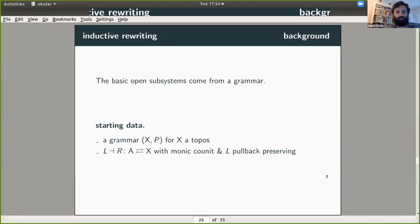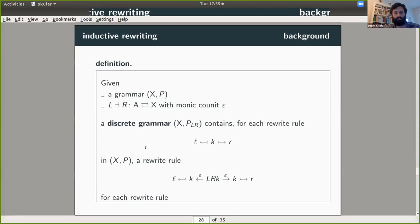Just another minute or two, okay? Okay. So then the basic open subsystems come from a grammar. And the idea here is that this grammar (X, P) consists of closed systems and P the ways that we can rewrite these closed systems. But these are just closed subsystems. So we want to equip them with, what are they called? Inputs and outputs. That's what we do with this adjunction. And then from here, let me skip over ahead a few slides.